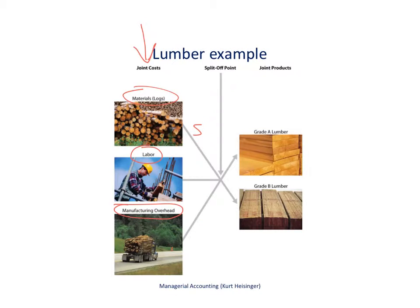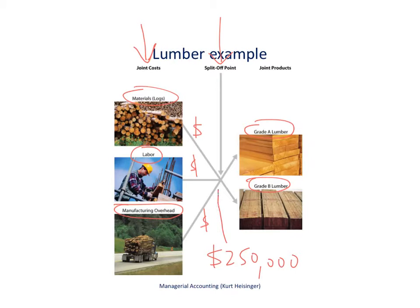These are all different costs that we incur, and those costs will lead to lumber. The split-off point is when we can actually identify the two different grades of lumber: grade A, which is the really high quality lumber, and grade B, which is the lower quality lumber. Let's assume we have a total of $250,000 in costs with our inputs — materials, labor, and overhead collectively equal $250,000. We've got to figure out how to allocate that $250,000 to our grade A lumber and grade B lumber.